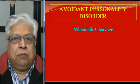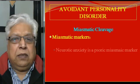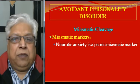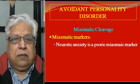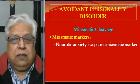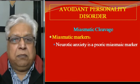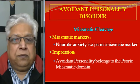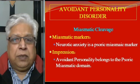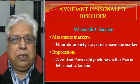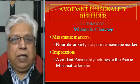At the miasmatic level, we have the following miasmatic markers. The avoidant trait is a neurotic anxiety, and it is a kind of psoric miasmatic pointer. Therefore, avoidant personality belongs to the predominantly psoric miasmatic domain.